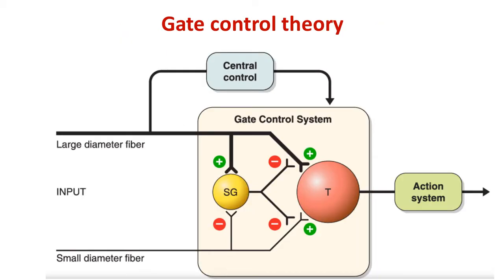In the gate control theory, large diameter fibers like A-beta in the dorsal column give recurrent collaterals to the pain afferent pathway directly or through an inhibitory interneuron that acts like a gate. When large diameter fibers are stimulated — for example, by touching around the wounded area — the touch fibers give collaterals to the pain afferent nerve pathway.